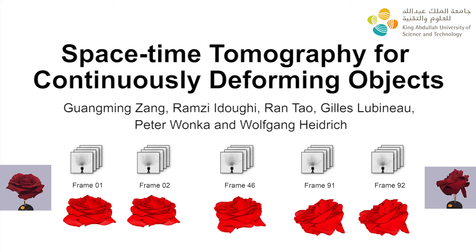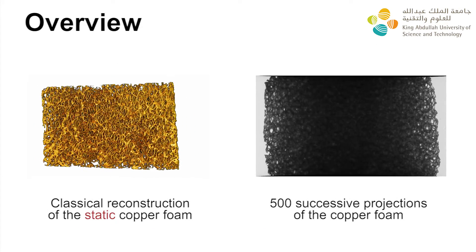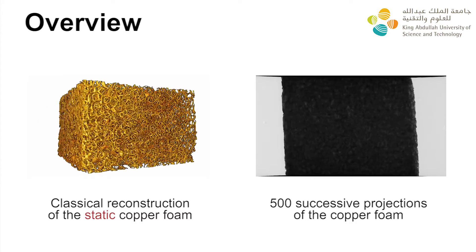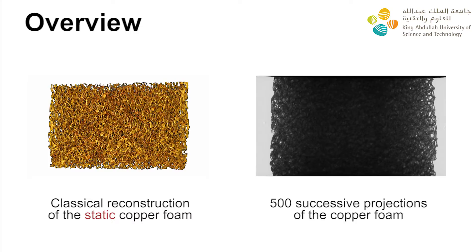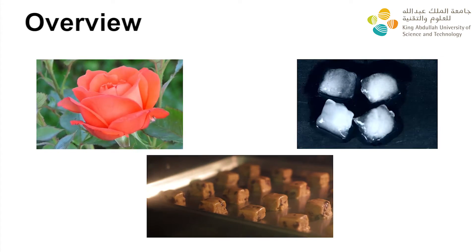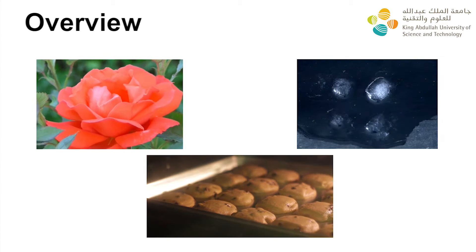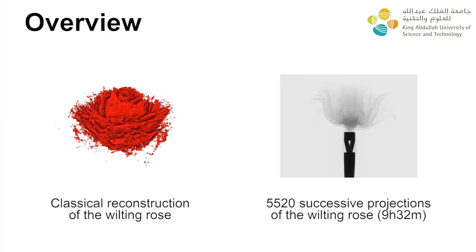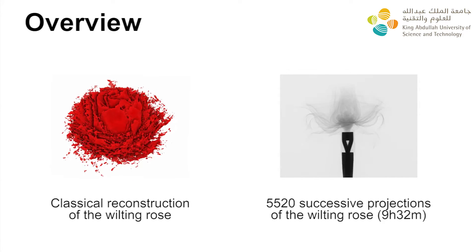We present a novel space-time tomography technique for the reconstruction of continuously deforming objects. Computed tomography is a powerful tool for analyzing objects with internal structures or complex geometry. However, it requires hundreds or even thousands of scans from different viewing angles to obtain good results. For deforming objects or phenomena, static reconstruction tomography is unable to provide a good reconstruction. For this wilting rose, the moving petals are badly reconstructed using static reconstruction.